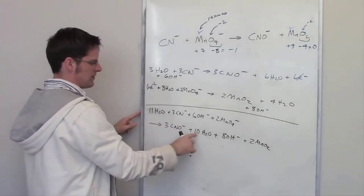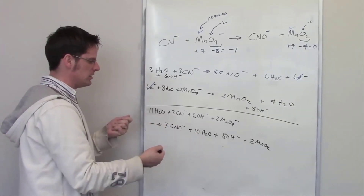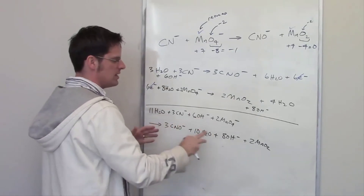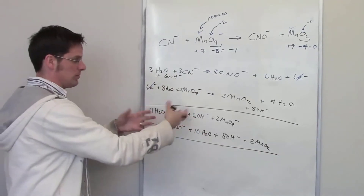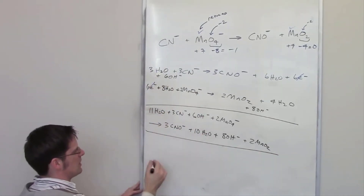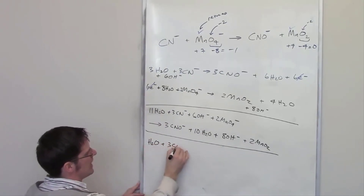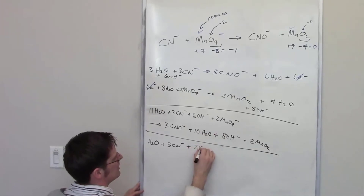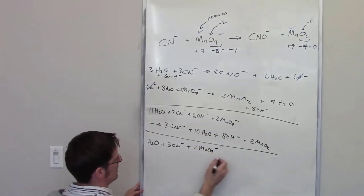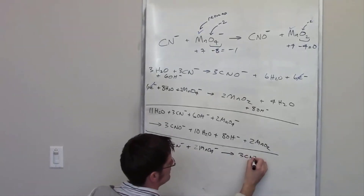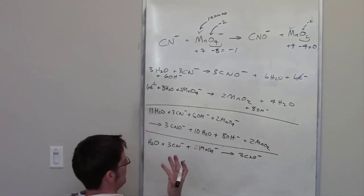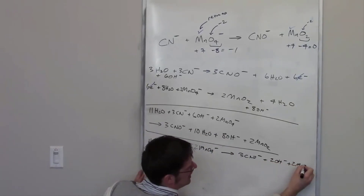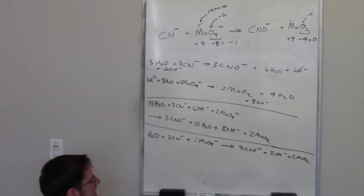I can simplify: I have eleven H₂O on the left and ten on the right, so I subtract ten from both sides, leaving one H₂O on the left. I have eight OH⁻ on the right and six on the left, so I subtract six from both sides, leaving no OH⁻ on the left and two OH⁻ on the right. The simplified left side is: H₂O + 3 CN⁻ + 2 MnO₄⁻. The right side is: 3 CNO⁻ + 2 OH⁻ + 2 MnO₂.